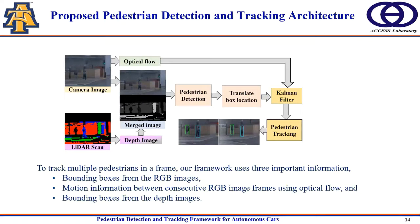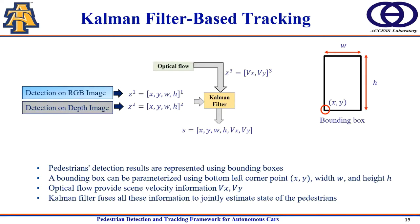Now let's discuss the tracking part. The Kalman filter has been extensively applied to pedestrian tracking from camera streams. Our framework uses this technique to predict and update pedestrian statistics from continuous camera and LiDAR streams. It fuses depth information to track multiple pedestrians using three key inputs: bounding boxes from RGB images, optical flow between consecutive RGB frames, and bounding boxes from depth images. The output of the Kalman filter is a state vector representing bounding box position with velocity information.